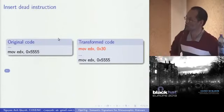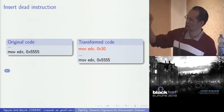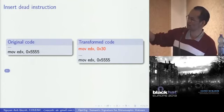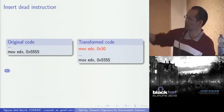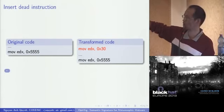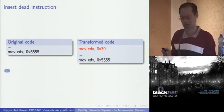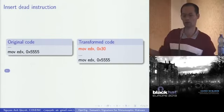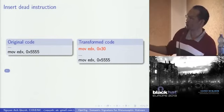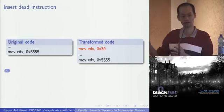First, insert dead instruction. On the left side, the original code copies 5555 to EDX. When the metamorphic transforms this code, it inserts another instruction before that — copy 30 to EDX. That is a dead instruction because below we copy 5555 to EDX anyway, so you can remove it with no impact. But the transformed code looks very different. The left code and right code do the same thing, but syntactically they look different.